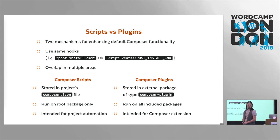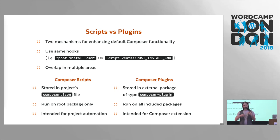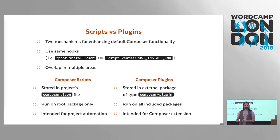There are two extensibility mechanisms in Composer that work a bit differently: scripts and plugins. They use the same hooks. When you do Composer install, there's a hook to act on the install action and do something after it completes. The hooks are pretty much the same, just in different syntax for both approaches. However, scripts are meant to automate your project and they only run for the root package, not for the dependencies of a given project. Whereas plugins are always active, even in the dependencies of your project, and they are meant to extend Composer's functionality.